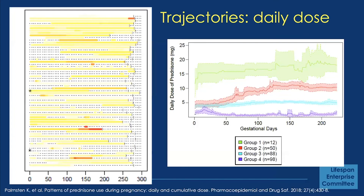In Dr. Palmston's study, oral corticosteroids are clearly taken very differently by different women. Each line here represents a woman, and the black dots indicate no oral corticosteroid use. You can see some women used it, stopped, used it again, and stopped again, while others used it consistently across gestation. The question was whether these patterns would work well with trajectory methods.